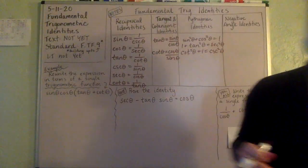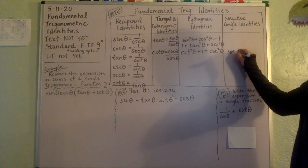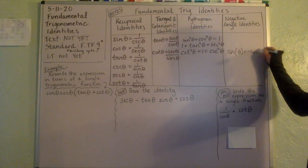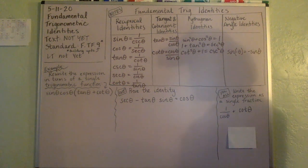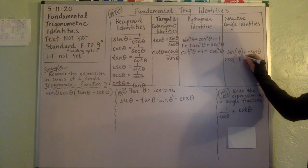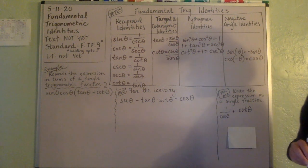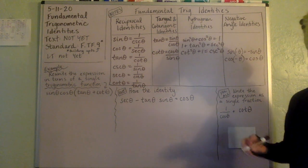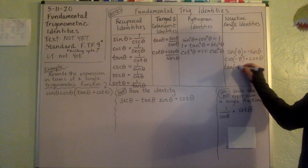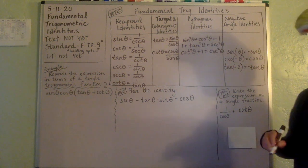Lastly, we have our negative angle identities. The sine of any negative angle will always equal negative sine theta. The cosine of any negative angle simply equals the positive cosine theta. And the tangent of any negative angle equals the negative of the tangent.